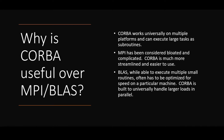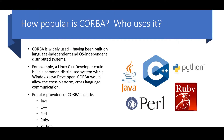CORBA works universally on multiple platforms and can execute large tasks at some routines. MPI has been considered loaded and complicated, whereas CORBA is much more streamlined and easier to use. BLAS, while able to execute multiple small routines, often has to be optimized for speed on a particular machine. CORBA is built to universally handle larger loads in parallel. CORBA is widely used, having been built on language-independent and OS-independent distributed systems. For example, a Linux C++ developer could build a common distributed system with a Windows Java developer. CORBA will allow the cross-platform, cross-language communication. Popular providers of CORBA include Java, C++, Perl, Ruby, and Python.